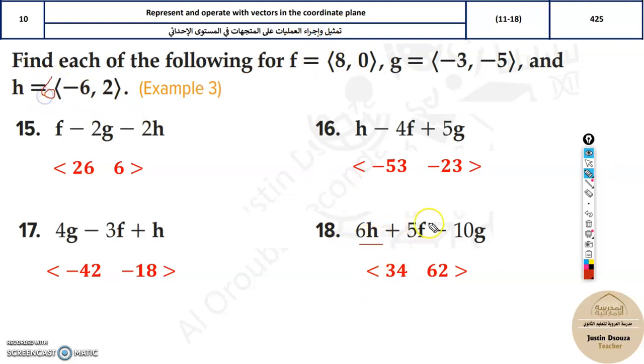6h, so multiply 6 over here, plus 5f multiply 5 over here, and lastly minus 10g. So don't forget the signs as well. Then just solve it all and check your answers with the solved answers.